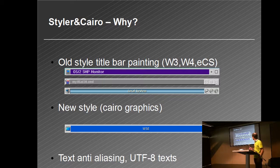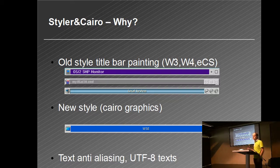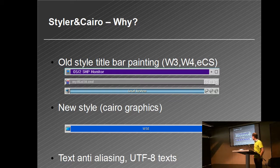With the use of Cairo, which is a graphics library, we now have a completely different result. Probably you don't really see how the text is getting better here because the text is too small to see the aliasing, but on your display it makes a really big difference.